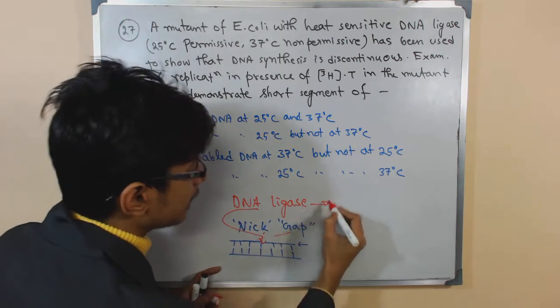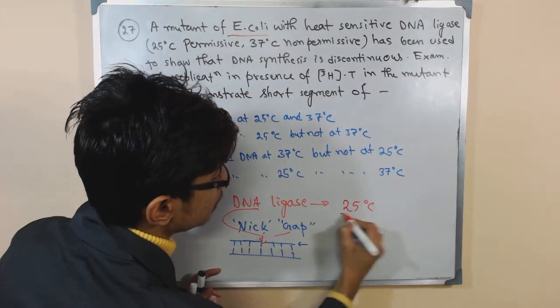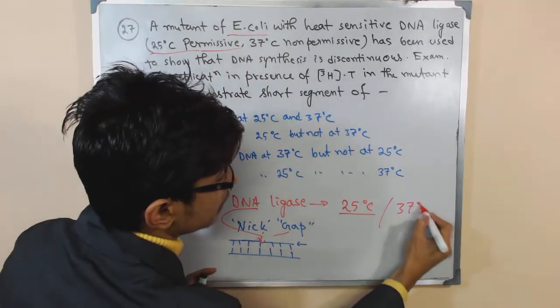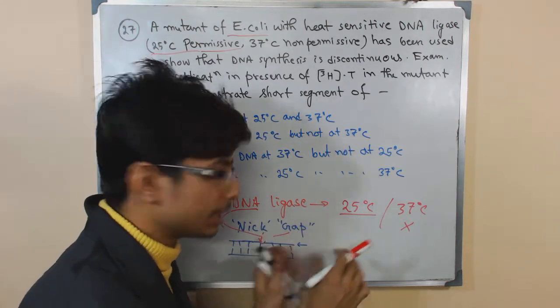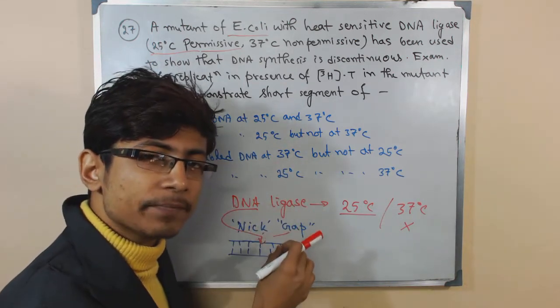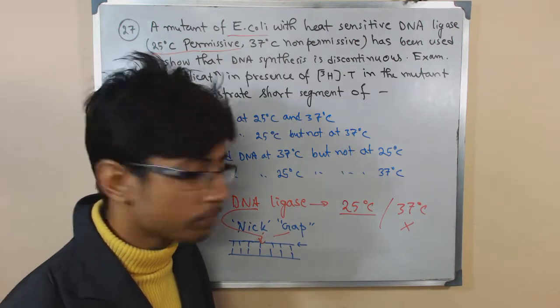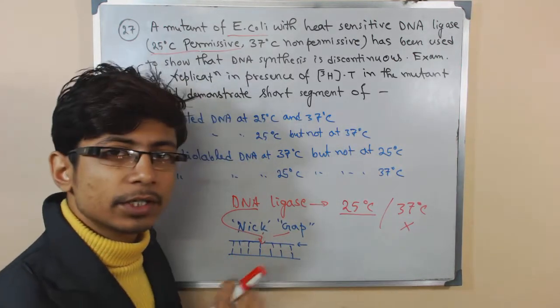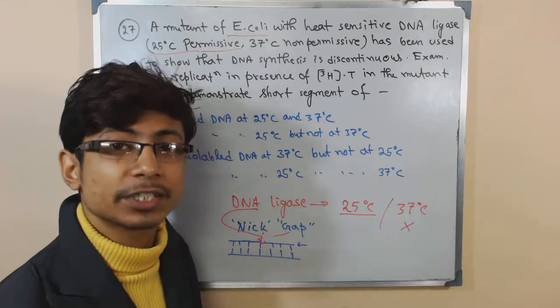Now in this case, this DNA ligase of E. coli can easily function at 25 degrees Celsius temperature. It is permissive, but they won't function at 37 degrees Celsius temperature. That means if we carry this DNA replication at 25 degrees Celsius, DNA ligase will definitely fill those nicks or join the nicks, and as a result DNA replication can continue and it can end. But if it conducts at 37 degrees Celsius temperature, it will end up with short segments of DNA because DNA ligase will not work.